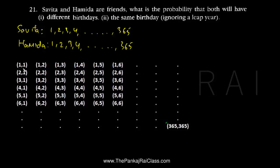The sample space will look something like this. This represents that both of them are having their birthday on the first. This represents that Savita is having on the first and Hamida on the second. This represents that Savita is having on the first and Hamida is having on the third, and so on. The number of points in this sample space will be 365 times 365, so that would be the total number of points in the sample space.